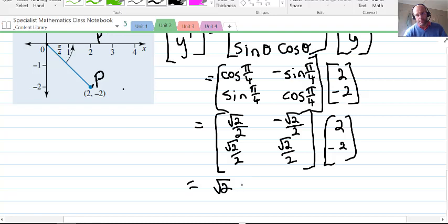Multiply that through. We have √2/2 times 2 is √2, plus another √2 because two negatives make positive. Then the second row times the column, we have another √2 minus √2. So that comes out as 2√2, 0 is the new coordinate.